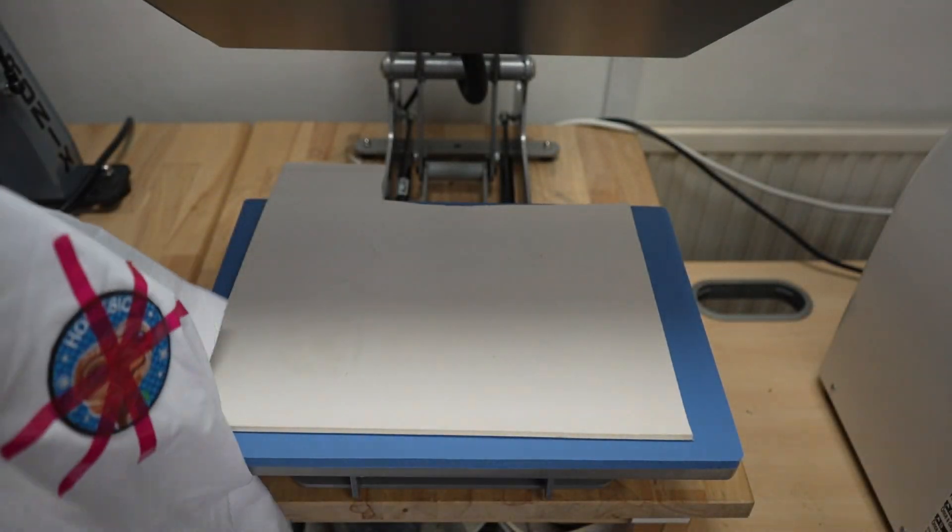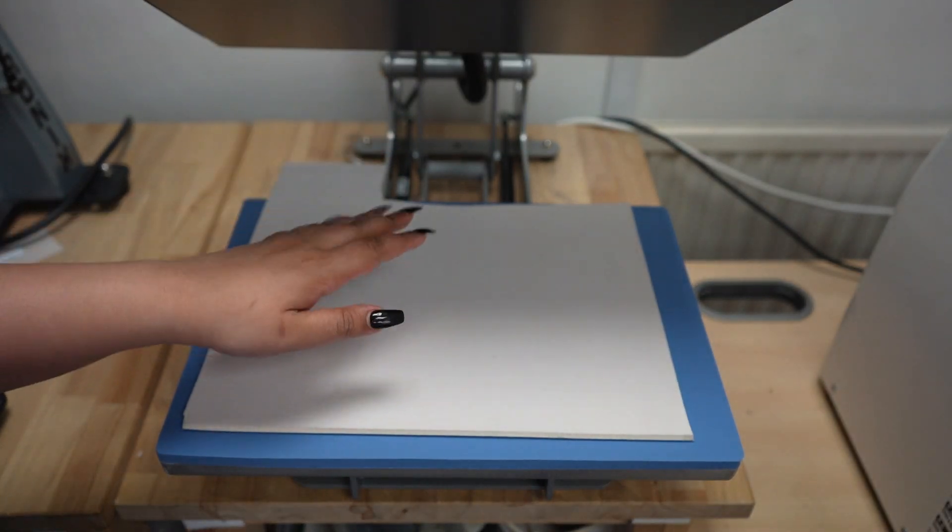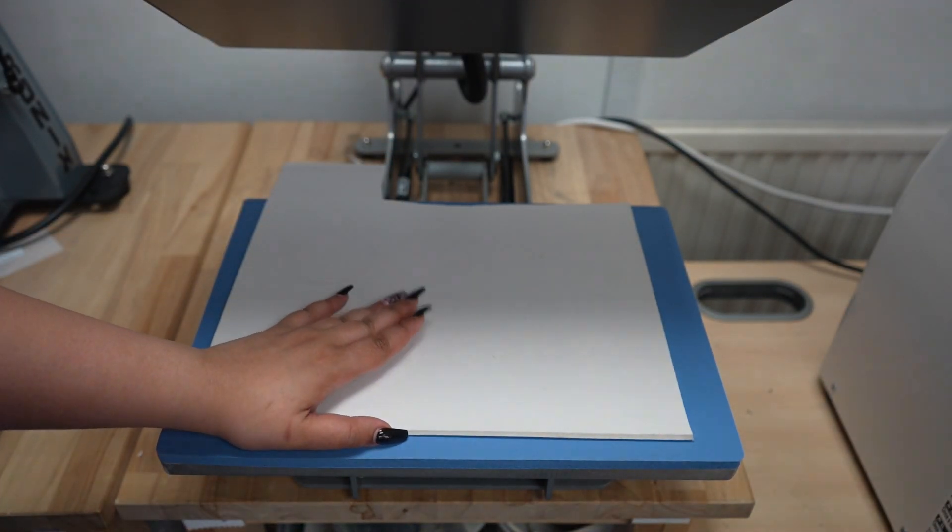Now my heat press is top heating. Meaning my heat platen is on the top, so I will have to turn my garment over to press.